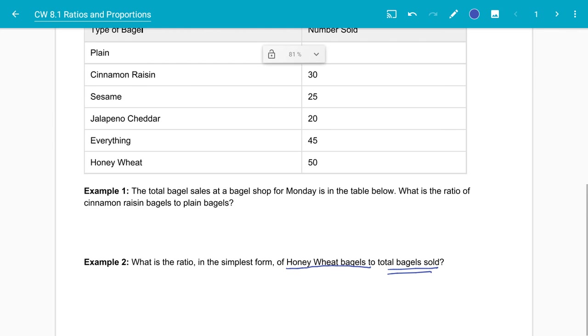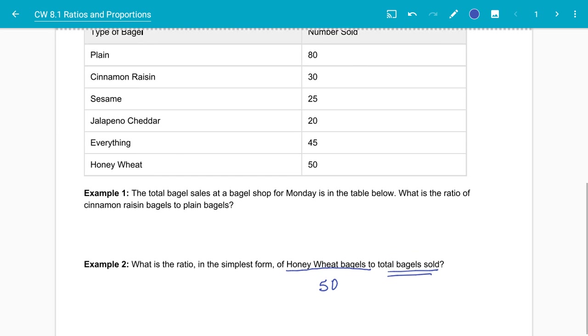So we can look at the honey wheat bagels, which are right here. We know that we sold 50 honey wheat bagels, but then they want the total bagels sold.